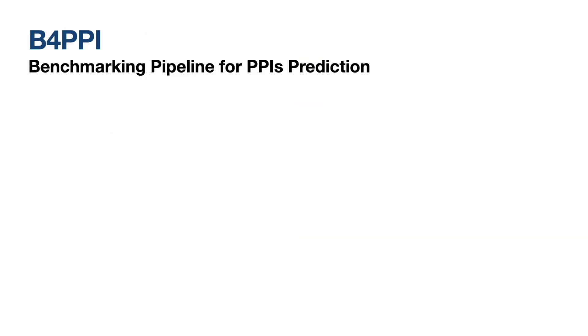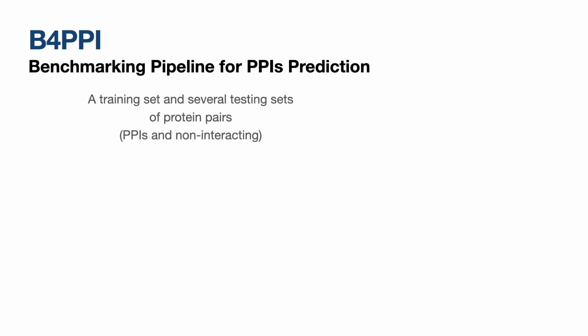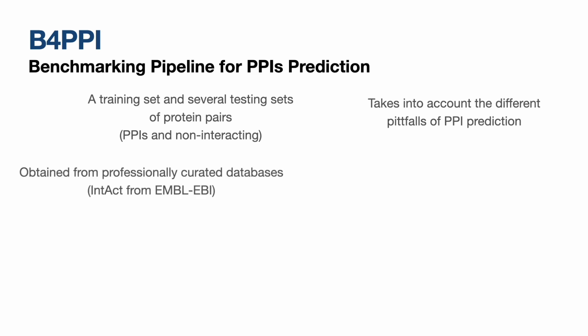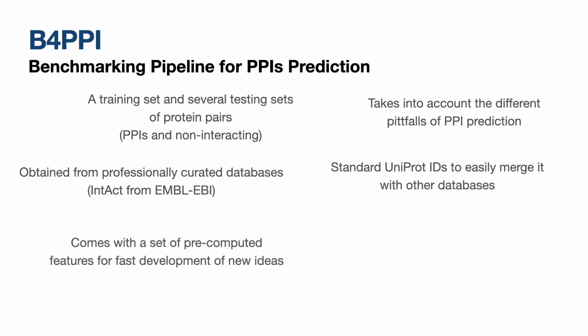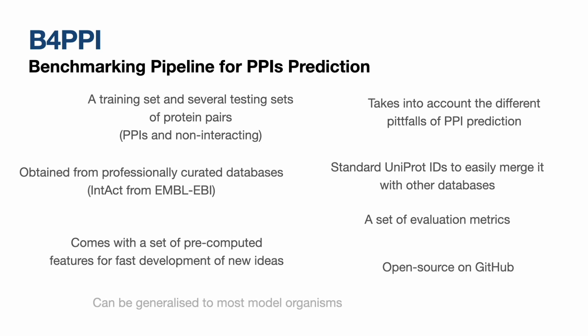We also still need to understand why models make different predictions. So first, we put together B4PPI, which is at heart a training and testing set. These are built to take into account some well-known pitfalls that are not always addressed. It's from IntAct, so it's professionally curated and uses standardized IDs. It comes with pre-computed features for people who want a quick-and-dirty try, with recommended metrics, and it's open source on GitHub. It can easily be adapted to most model organisms.